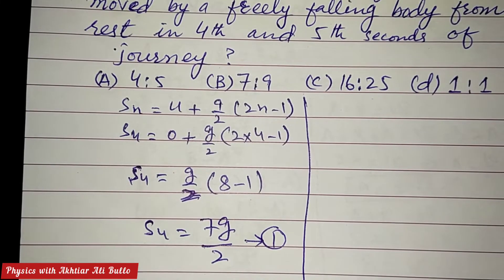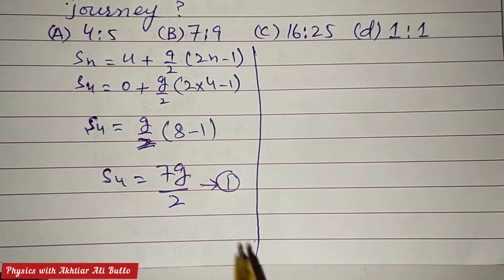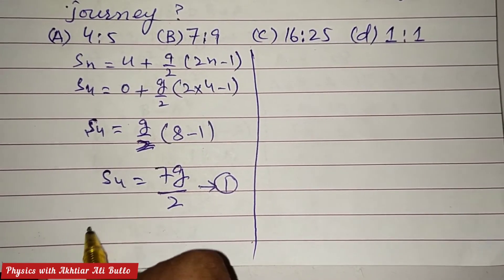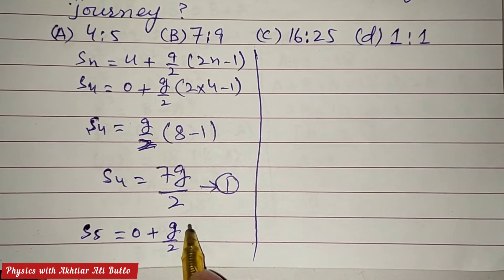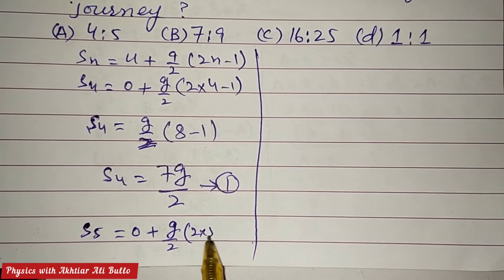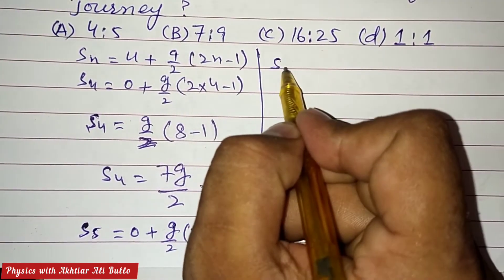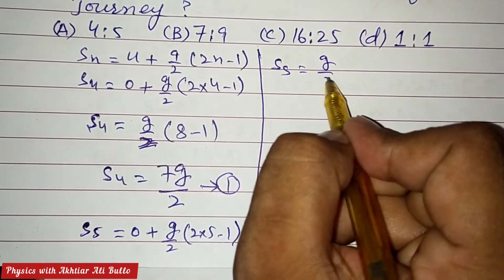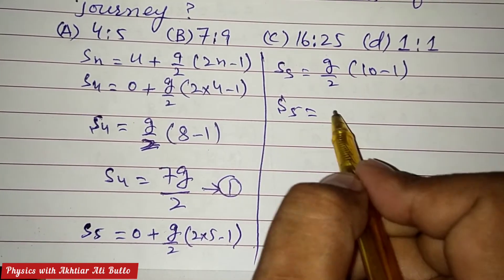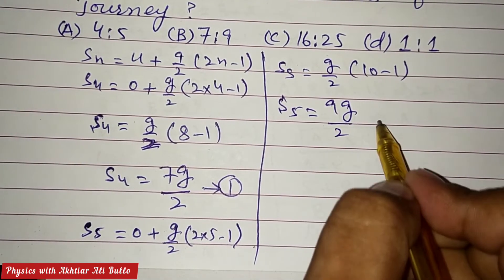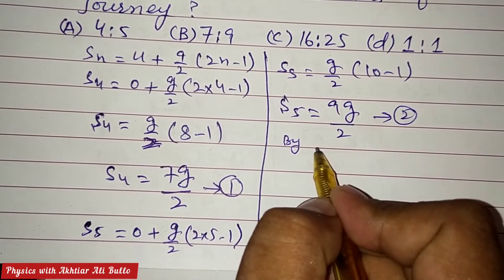Now we calculate the distance in the fifth second: it equals 0 plus g upon 2 into (2 × 5 − 1), which equals g upon 2 into (10 − 1), giving 9g upon 2. This is equation number 2. Now we proceed by dividing equation 1 by equation 2.